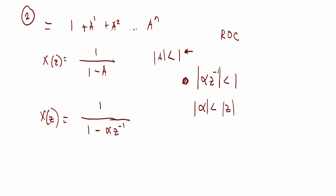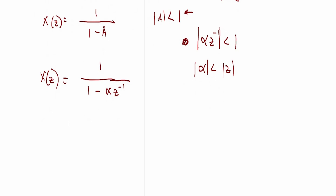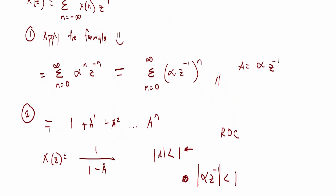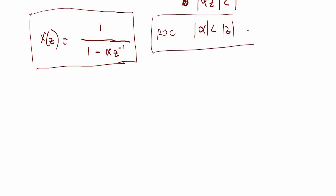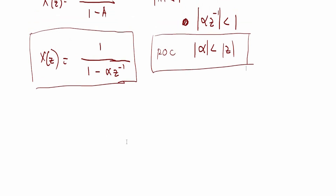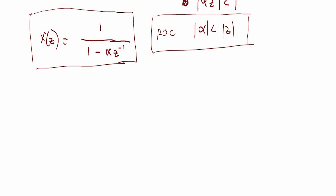Don't forget the absolute value. So the final answer for X of Z is this, and the region of convergence is this. Now we're done, but let me give some additional information since this is a causal signal.